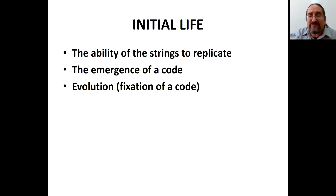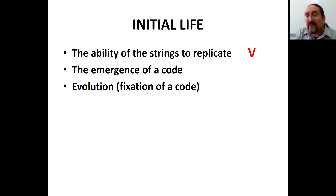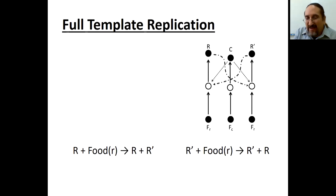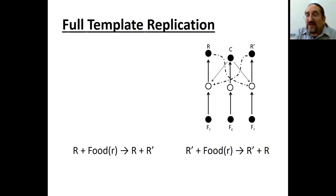Initialization means we need the ability of strings to replicate, the emergence of a code, and then evolution — mainly in order to achieve the fixation of a code. Strings can replicate via autocatalytic sets. For RNA, we would like to see template replication: an R-string can be replicated by forming R-prime, the complement, and then from R-prime you get R again. You need some catalysis for this, provided by catalyst C.